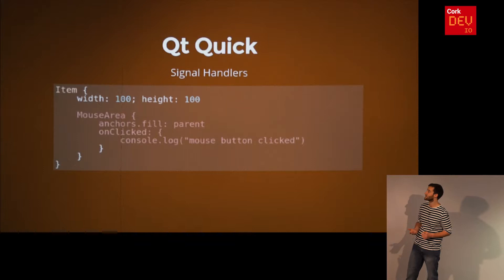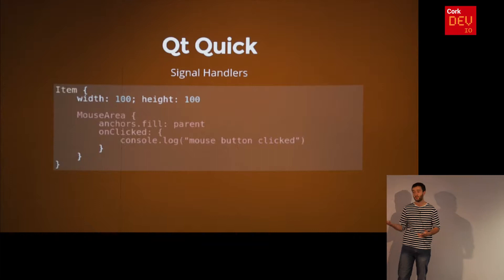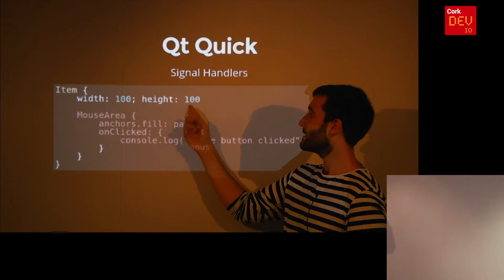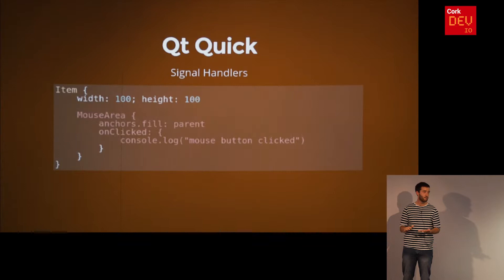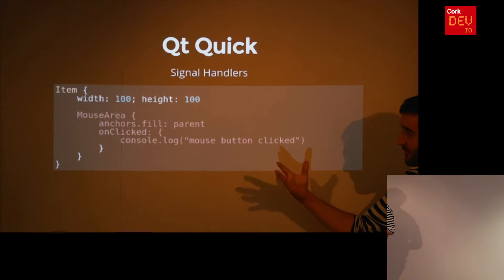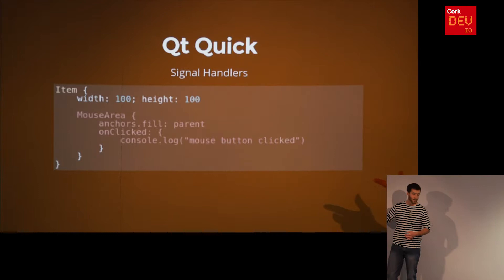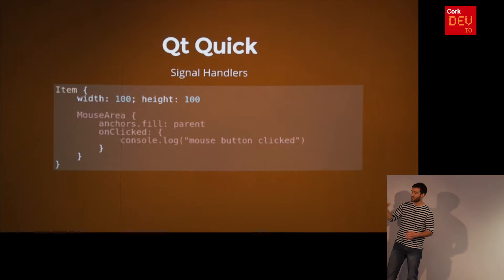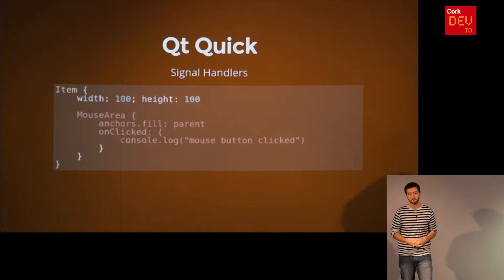To handle signals and user events, you can have an item with a mouse area that fills the component. A mouse area is like an invisible layer you put on a component to deal with user actions and events. You have an onClick property as an event handler, and within it you write inline JavaScript. When the user clicks on that component it will print a message to the console. A nice thing for JavaScript developers is that the API to print to the console and many parts of the framework is the same as you'd find in the browser.